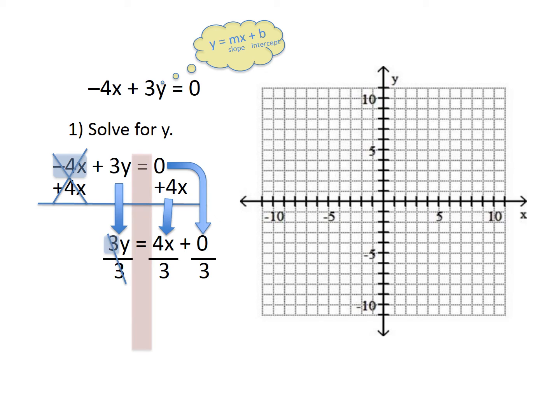When you do all the division, the 3s mark out, and you get y = 4/3x + 0, because 0 divided by 3 is 0. This is our slope-intercept form, and we're going to bring that to the next page.